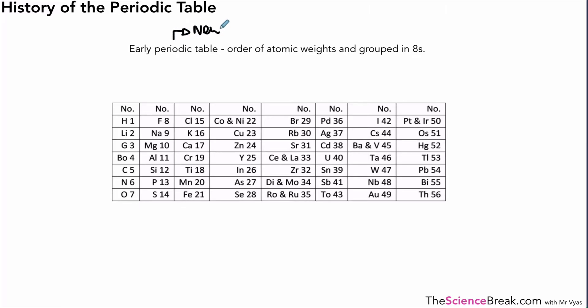So the early periodic tables were in order of atomic weights and grouped in eights, and Newlands, John Newlands in around about 1864 was the person who did that. Now let's just take a quick look at a diagram of his table. We've got the atomic weights in order there so you can go through the table and see they're in order of atomic weights. There were some that had similar atomic weights and they were put in a similar place because of their similar atomic weights.